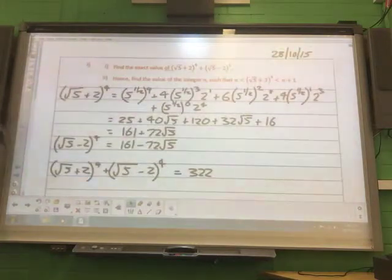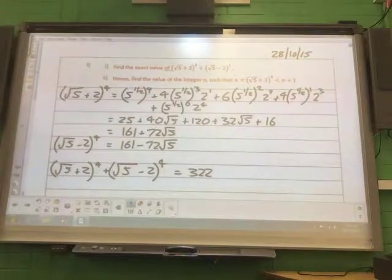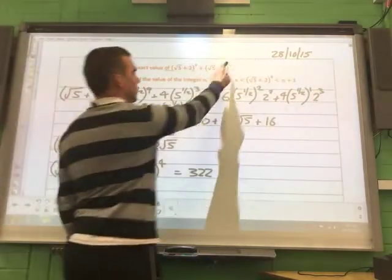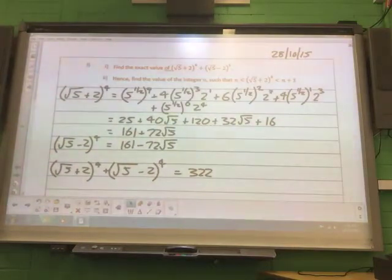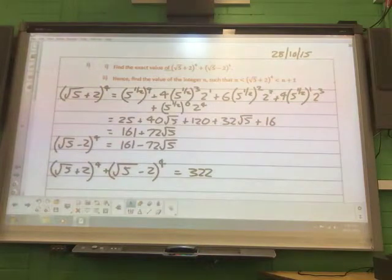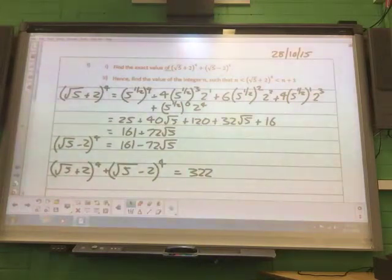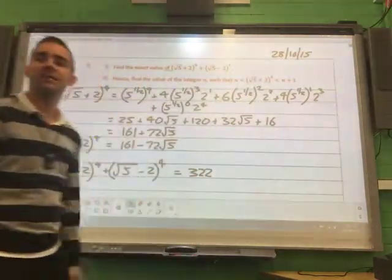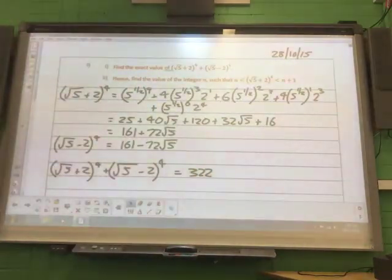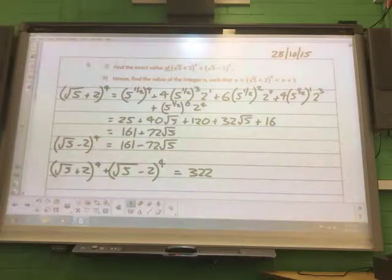So that's part I. Now, I think in your notes it says hence proved. So if you cross that out, because that's the second part of the question here. So hence find the value of the integer n, such that n is less than root 5 plus 2 to the power of 4, which is less than n plus 1. So in other words, we need to find the integer value n that root 5 plus 2 to the power of 4 lies between.